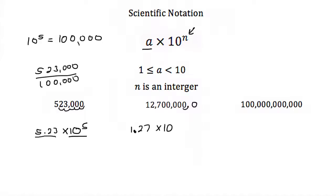So this time we'd move it 1, 2, 3, 4, 5, 6, 7 times. So 12,700,000 then would be 1.27 times 10 to the seventh.